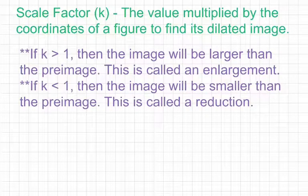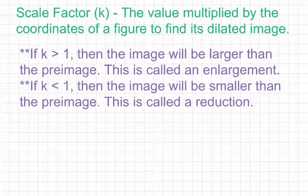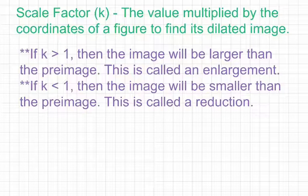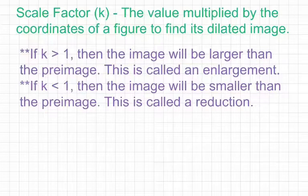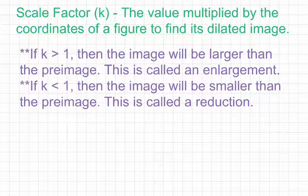On the other hand, if the value for k is less than 1 — between 0 and 1 — then the image will be smaller than the pre-image. This is called a reduction. So if k is between 0 and 1, the figure you end up with will be smaller than the figure you start with. Let's take a look at a couple of examples: one where we'll have an enlargement and one where we'll have a reduction.